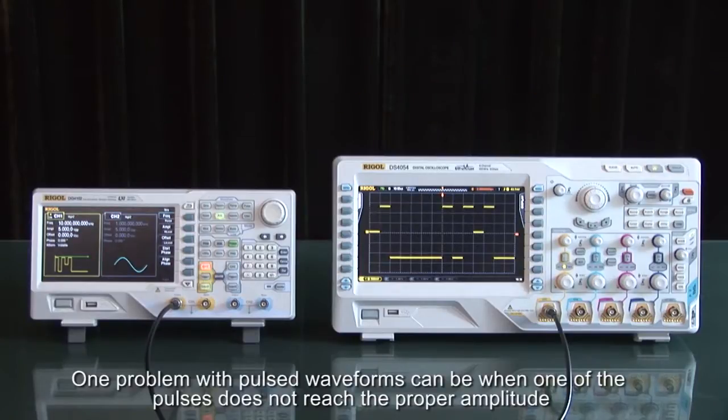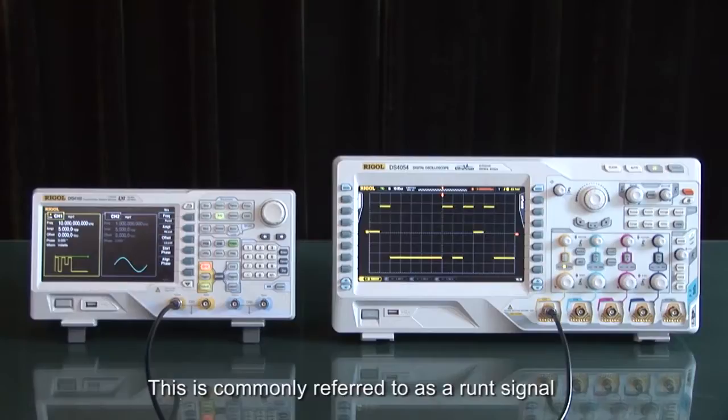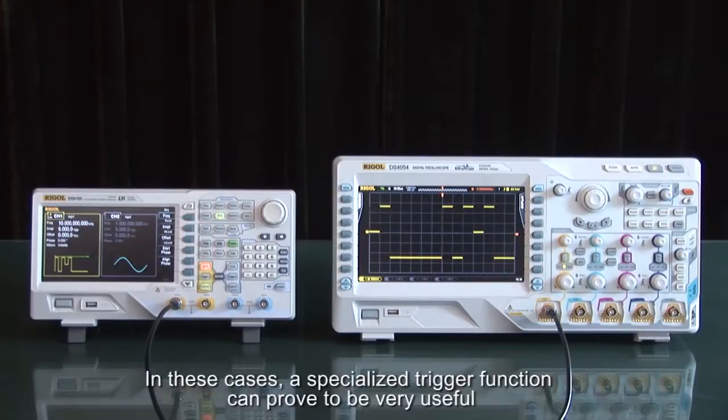One problem with pulsed waveforms can be when one of the pulses does not reach the proper amplitude. This is commonly referred to as a Runt signal. In these cases, a specialized trigger function can prove to be very useful.